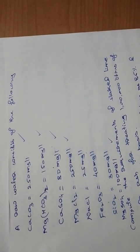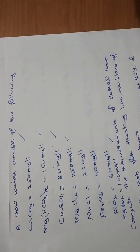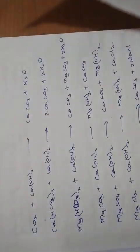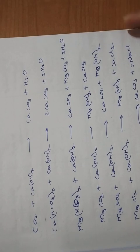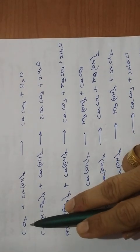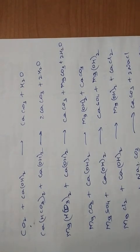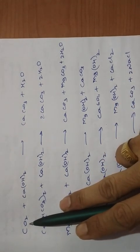When solving problems, it is very important that we first understand which chemical imparts hardness in the water, because some materials mentioned in a problem will not impart any hardness. Carbon dioxide also imparts hardness - the acidity in water is due to the presence of carbon dioxide or mineral acids, and both of these impart temporary hardness to the water.